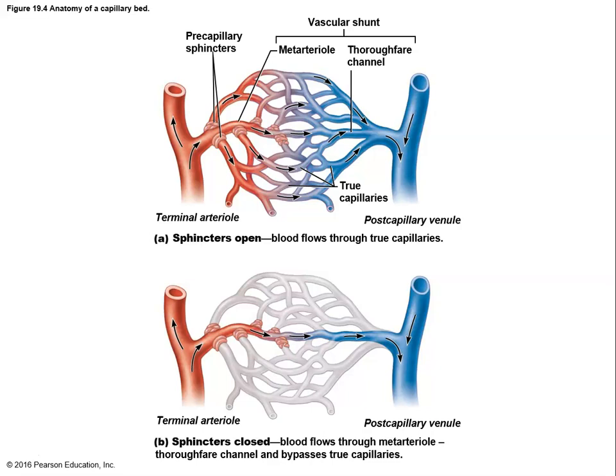Another cause of sphincter closure in capillary beds, especially in the skin, is shock. In shock, many capillary beds shut off to divert blood to the core — keeping the heart, lungs, and liver supplied — while the skin and muscles make do with less. This is an emergency response to redistribute blood to vital organs.